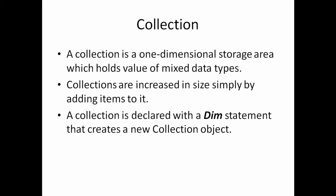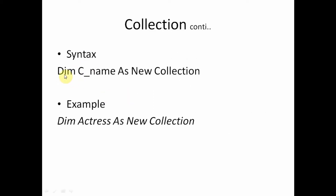When we add items within the collection, automatically the size of the collection gets increased. So at the time of declaration, there is no need to specify the size of the collection. The collection is also declared with the help of the Dim statement. The syntax is: Dim cName As New Collection. Here, cName is the user-defined name, As is the keyword, New is the keyword used to allocate memory, and Collection is the class.